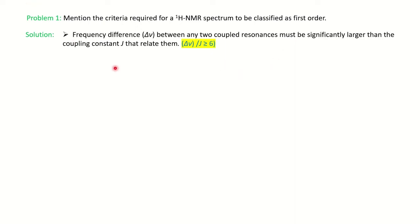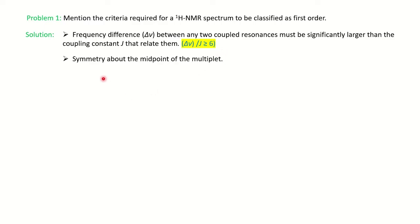The first criterion: the frequency difference Δν between any two coupled resonances must be significantly larger than the coupling constant J. We look at the chemical shift difference between the two signals; the ratio Δν/J should be greater than 6. If it is greater than 6, we consider it a first order spectrum.